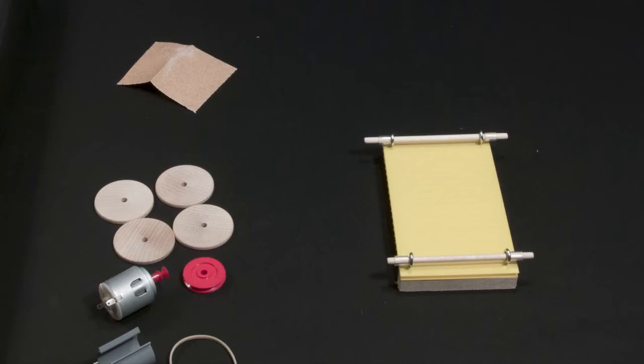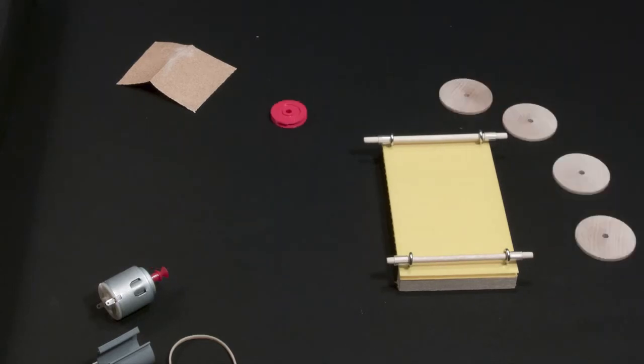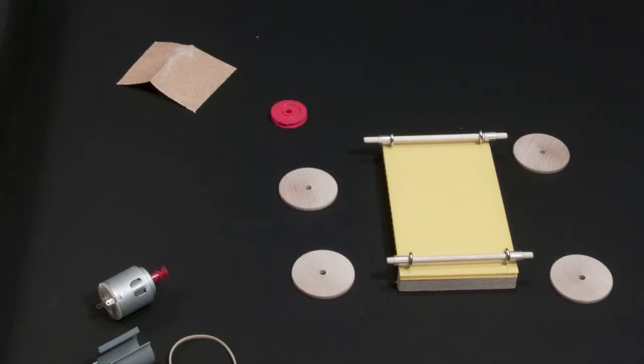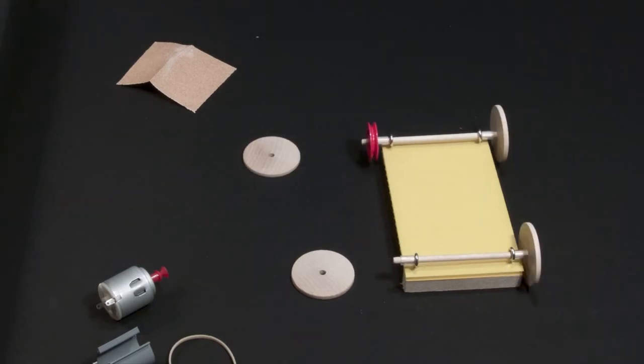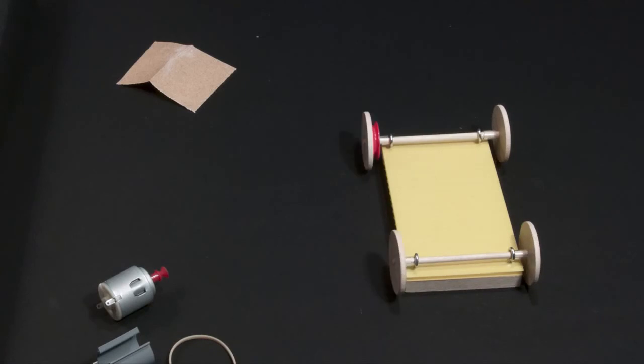It's almost time to put on the wheels of the car, but first you need to attach the red pulley. Slide the pulley onto the axle at the back of your car and then slide a wheel on. Repeat for the remaining three wheels.